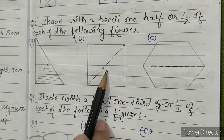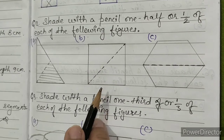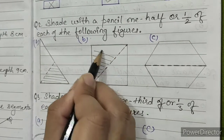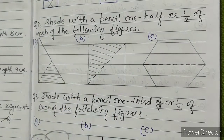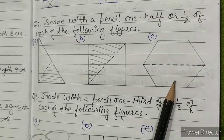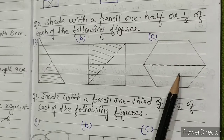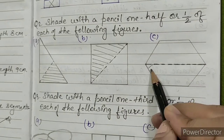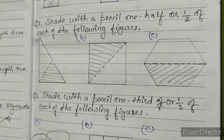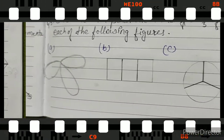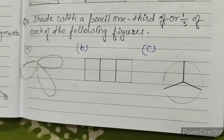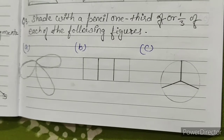C: this figure is also divided into two equal parts; we have to shade any one part. Question number 3: shade with the pencil one third, or 1 by 3, of each of the following figures. A: